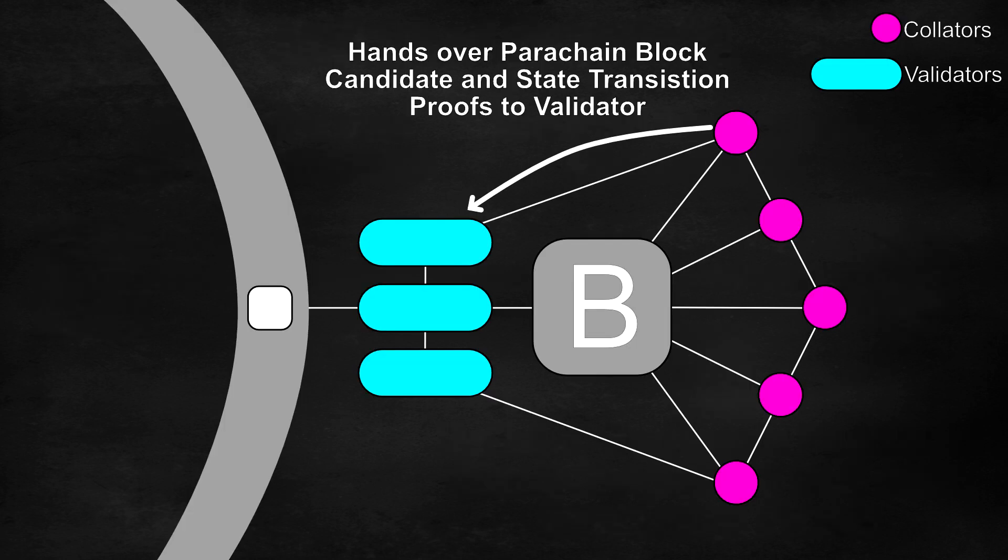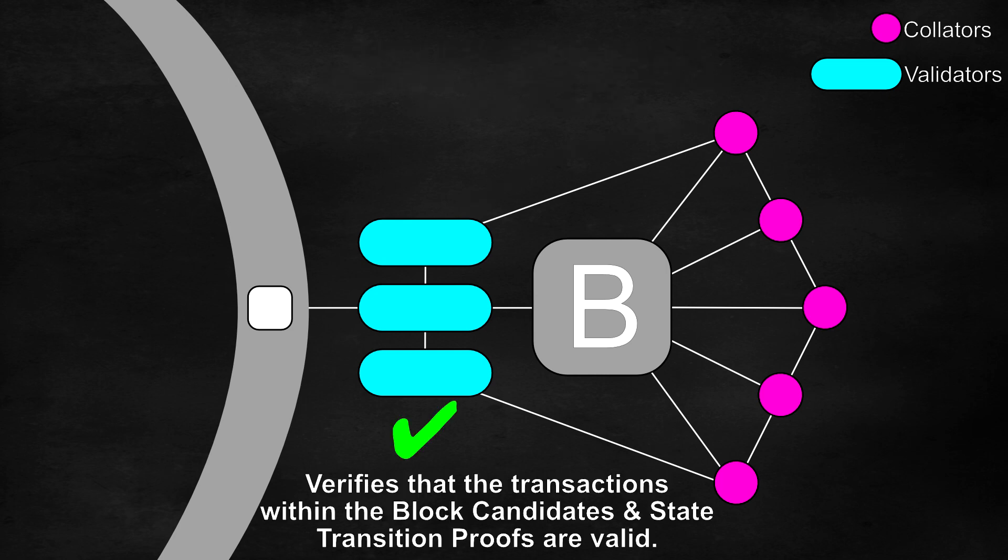The collators pass this parachain block candidate and the state transition proofs to the validators. The validators who are staking DOT or KSM tokens then verify the transactions within the parachain block candidate.